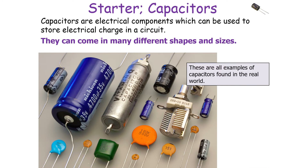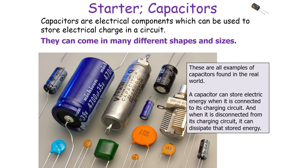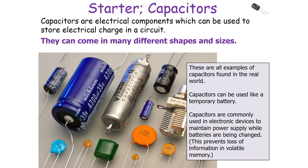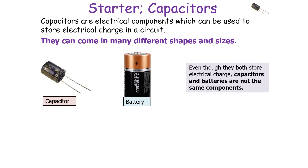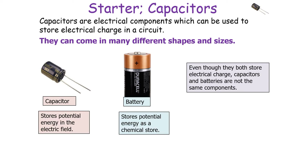Capacitors are electrical components which can be used to store electrical charge in a circuit. They can come in many different shapes and sizes — in this picture you can see examples of capacitors found in the real world. A capacitor can store electrical energy when connected to its charging circuit, and when disconnected it can dissipate that stored energy. Capacitors can be used like a temporary battery and are commonly used in electronic devices to maintain a power supply whilst the battery is being charged, to prevent the loss of information in volatile memory.